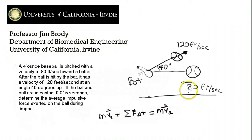So what do we have here? Well, you can see here, this is v1. v1 is 80 feet per second in this direction. v2 is 120 feet per second at this angle, it's a vector.